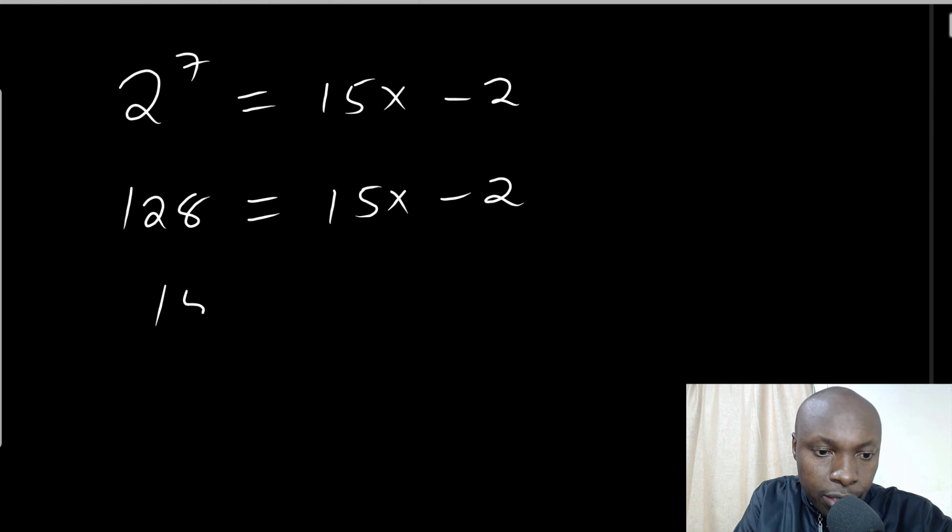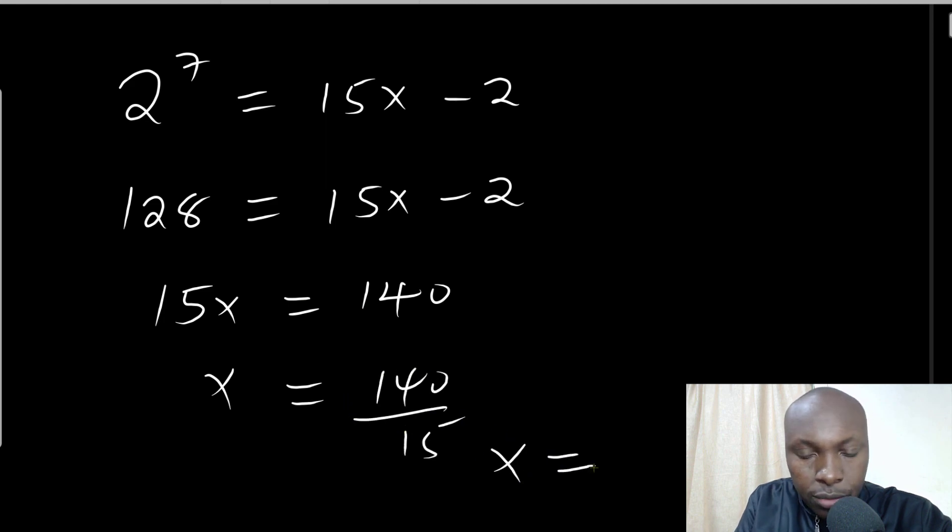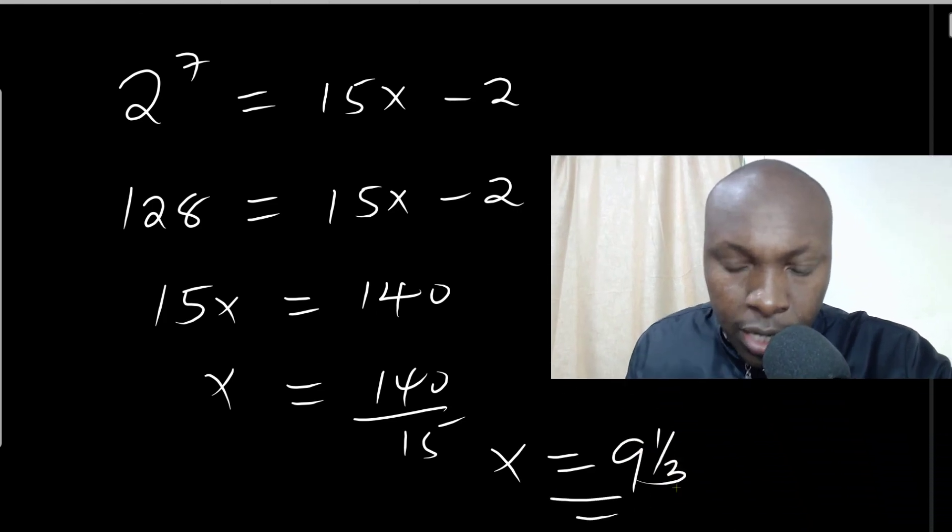Solving for x, you get 15x = 140, so x = 140/15, and x will be 9 and one-third. That is how you're supposed to solve that question.